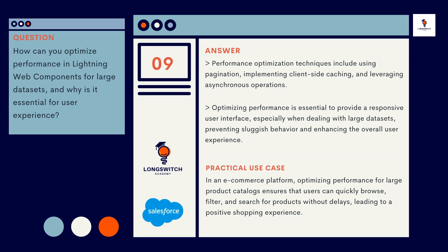Optimizing performance for large datasets is a must. Question number nine: how can you optimize performance in Lightning Web Components for large datasets, and why is it essential for user experience? Performance optimization techniques include using pagination, implementing client-side caching, and leveraging asynchronous operations. Optimizing performance is essential to provide a responsive user interface, especially when dealing with large datasets, preventing sluggish behavior and enhancing the overall user experience.